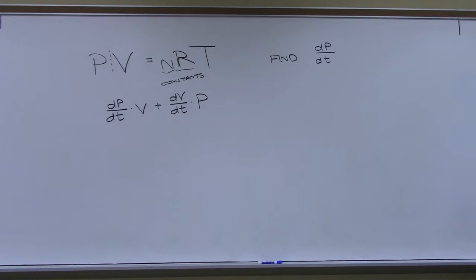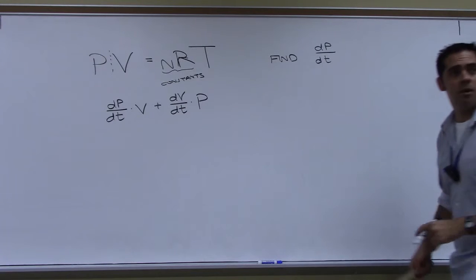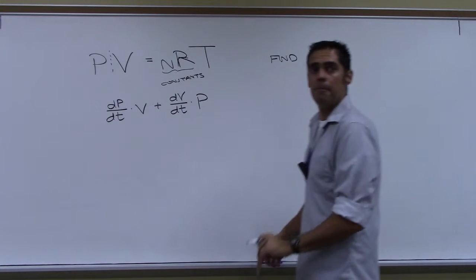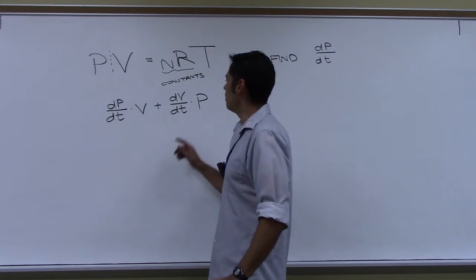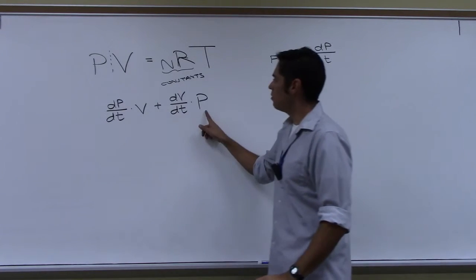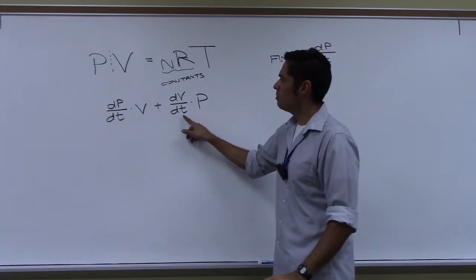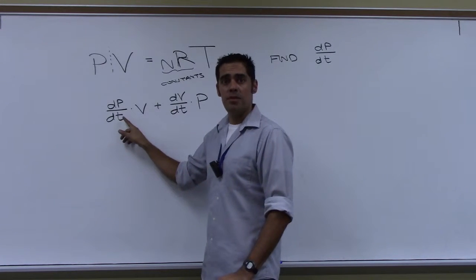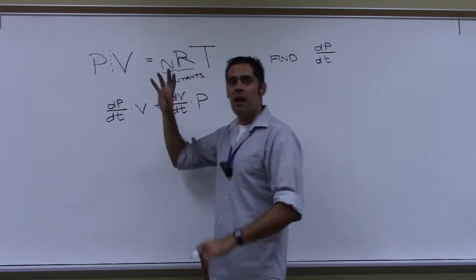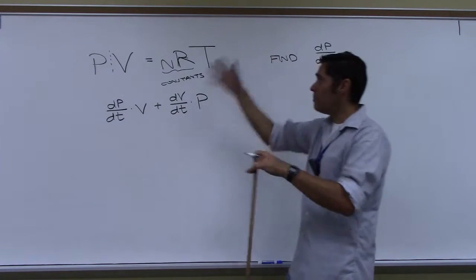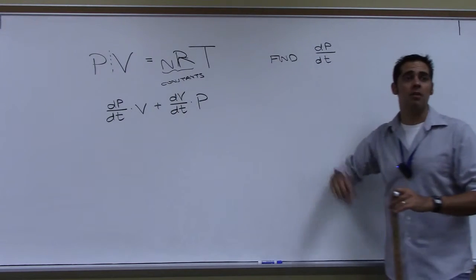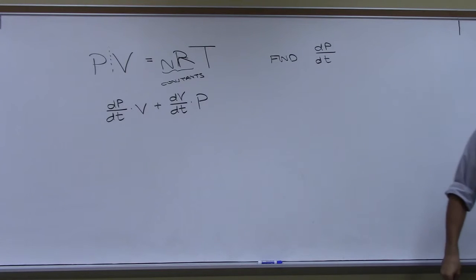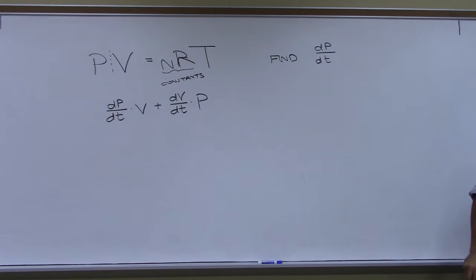Why wouldn't this be V? Time isn't in here, so nothing is going to go to one in this problem. Nothing. Time is in the back — time isn't in here so none of these derivatives simplify to one.